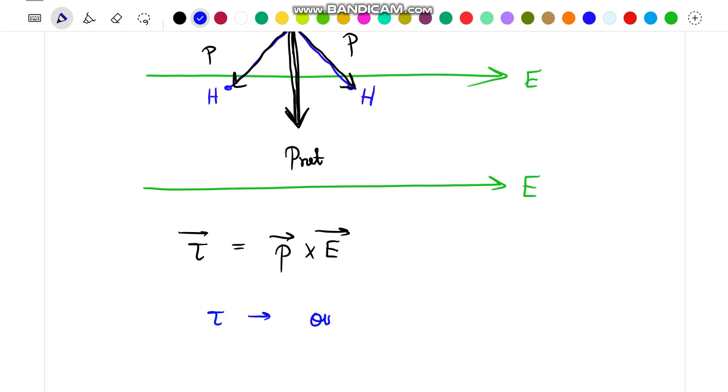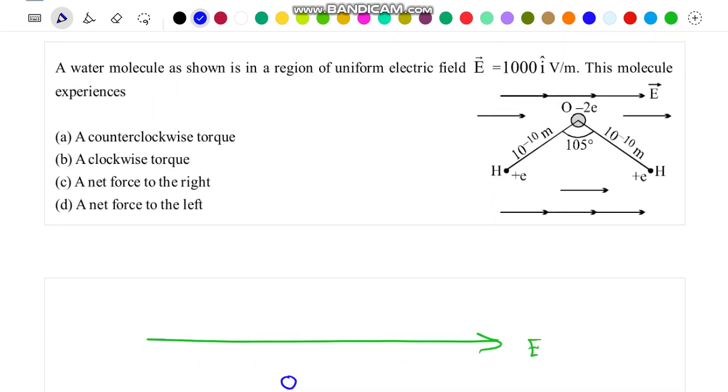The torque will act outwards, that is in anti-clockwise direction. We know that outward torque means anti-clockwise torque, so this is option A. Further, we know that when a dipole is placed in a region of uniform electric field, it experiences zero net force.